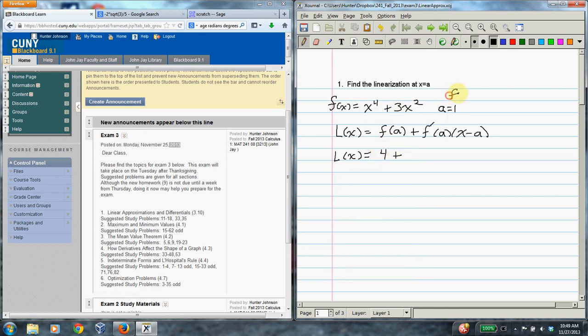We get 1 plus 3 is 4. And now what's the derivative of this thing? It is 4x^3 + 6x. And here we're supposed to plug 1 into the derivative, so that's 4 plus 6 is 10. And then this part just becomes x minus 1.